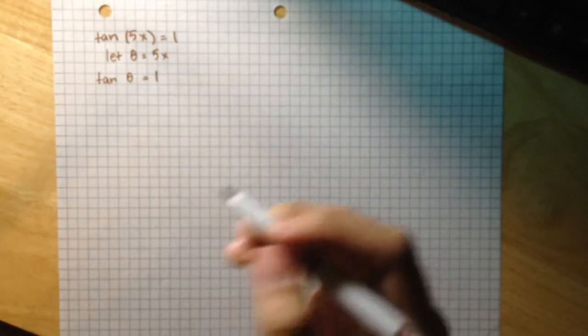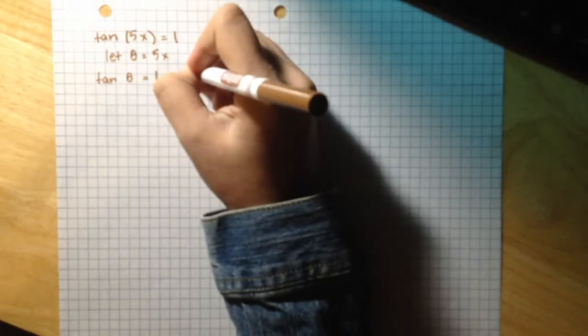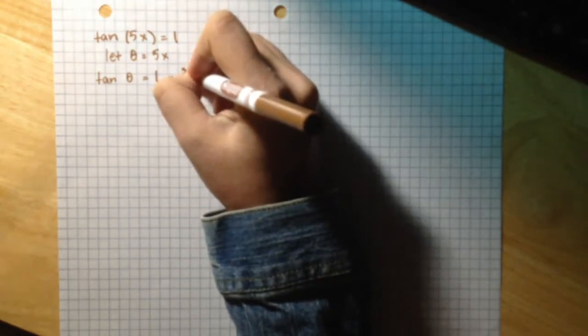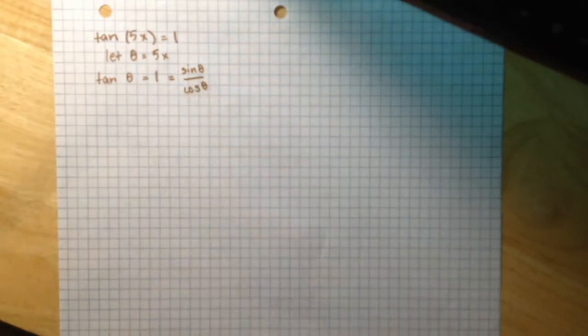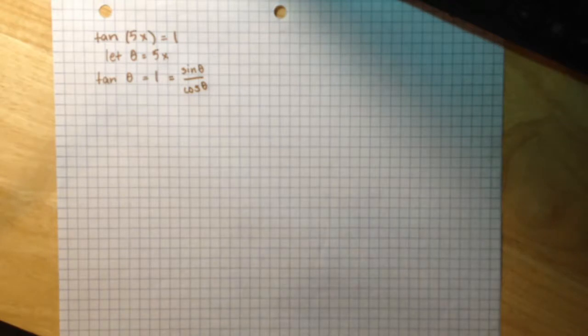Tangent is equal to the sine of theta over the cosine of theta.